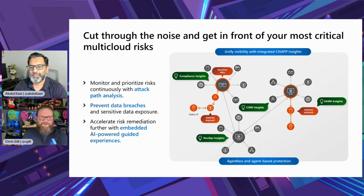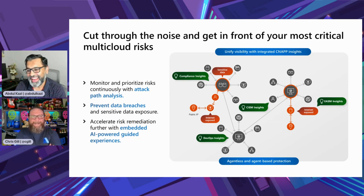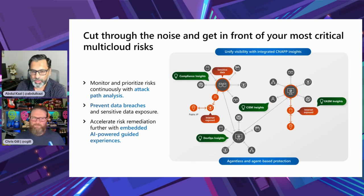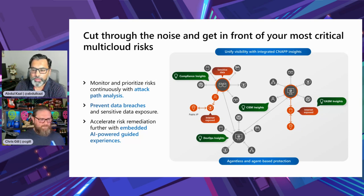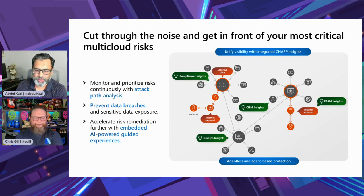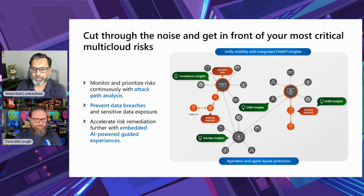Cutting through all the noise: once you turn this on, you get all kinds of notifications — now what? The biggest challenge is people get overwhelmed and might shut it off. That's why you take it easy, start small, and go from there. Some protections are also agentless, so depending on your policy, you can push it out through Intune or Group Policy. Have a game plan because this is going to blow up fairly quickly.